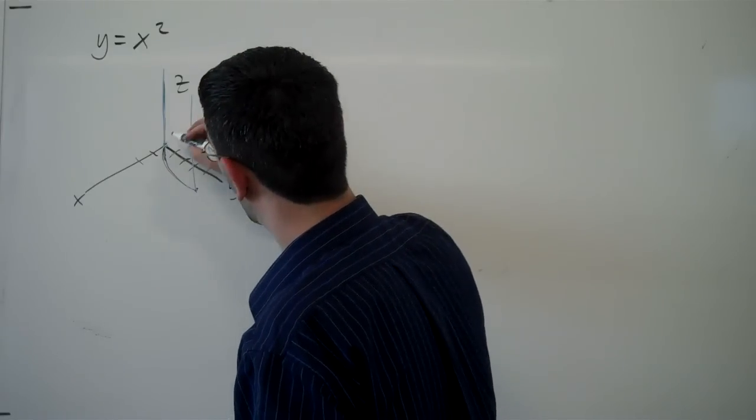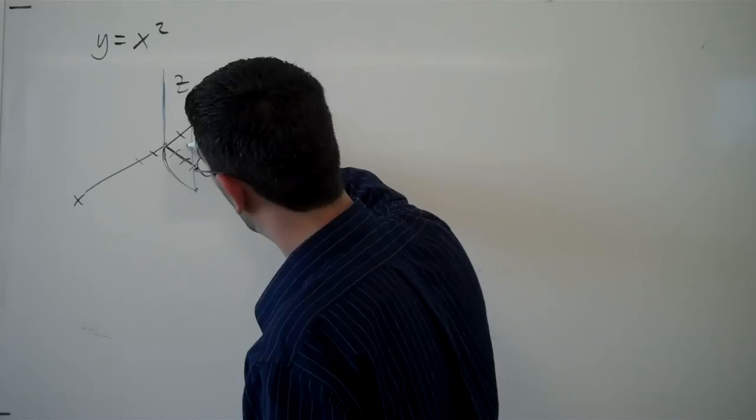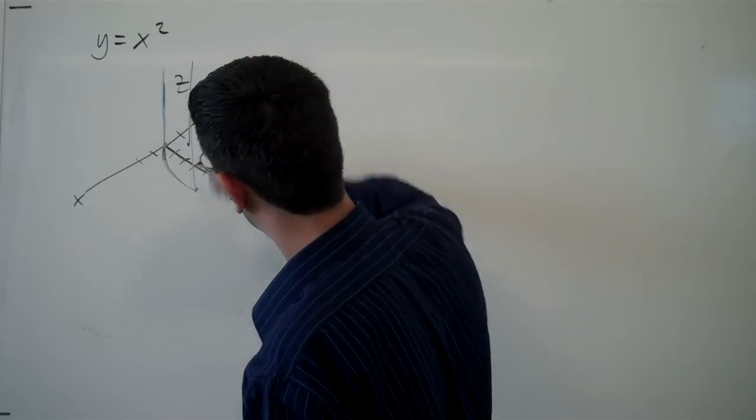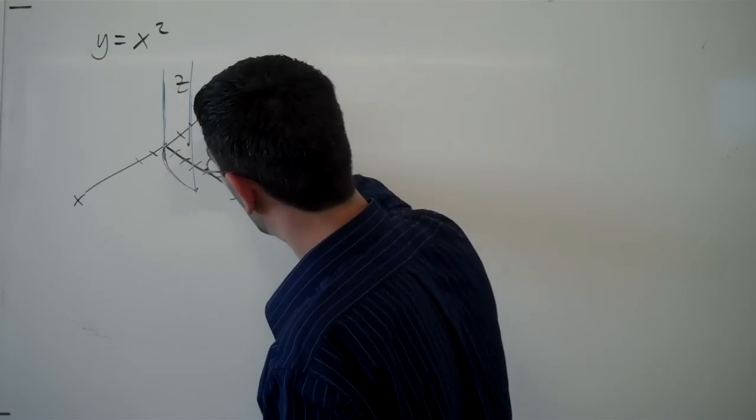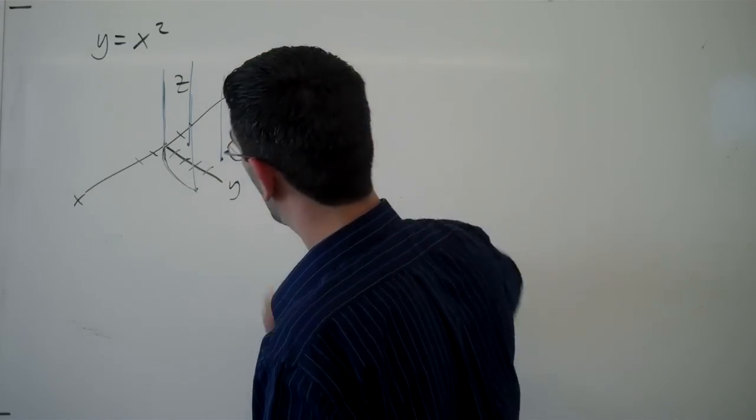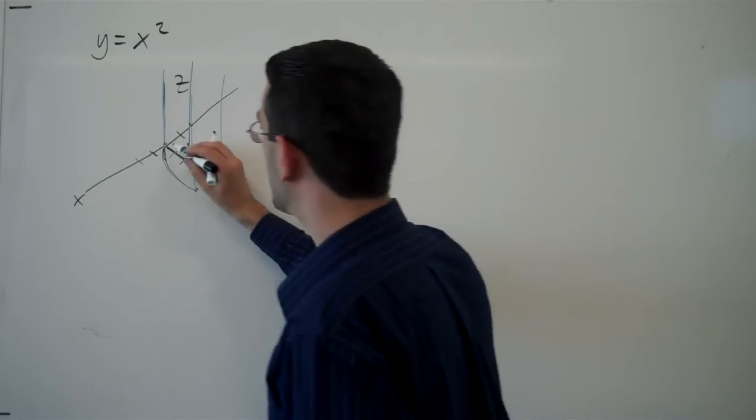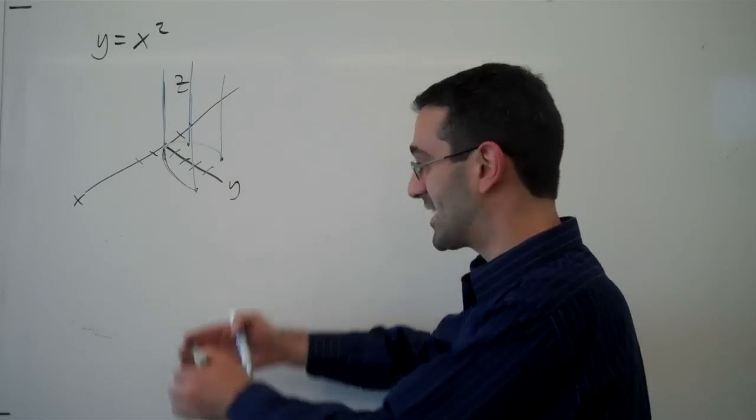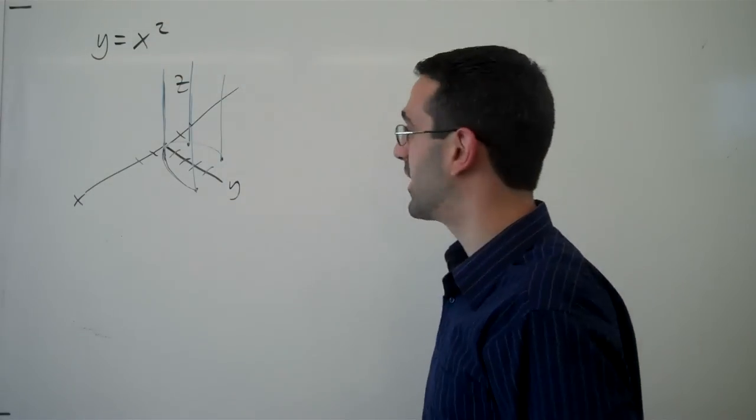If x was to be negative 1, y would be 1, but z could again be whatever it wants to be. If x is negative 2, y is 4, but z could be whatever it wants to be. And so while we get this parabolic shape in the x, y plane, it extends upwards for all values of z.